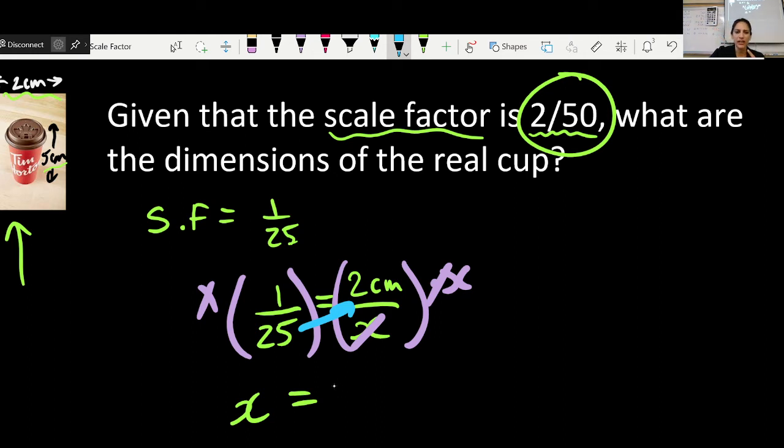So I would end up getting x equals how many centimeters? 50 centimeters because I multiplied the 2 centimeters by the 25 there. If that's confusing, maybe I'm not going to skip steps because I see the confusion in your eyes.